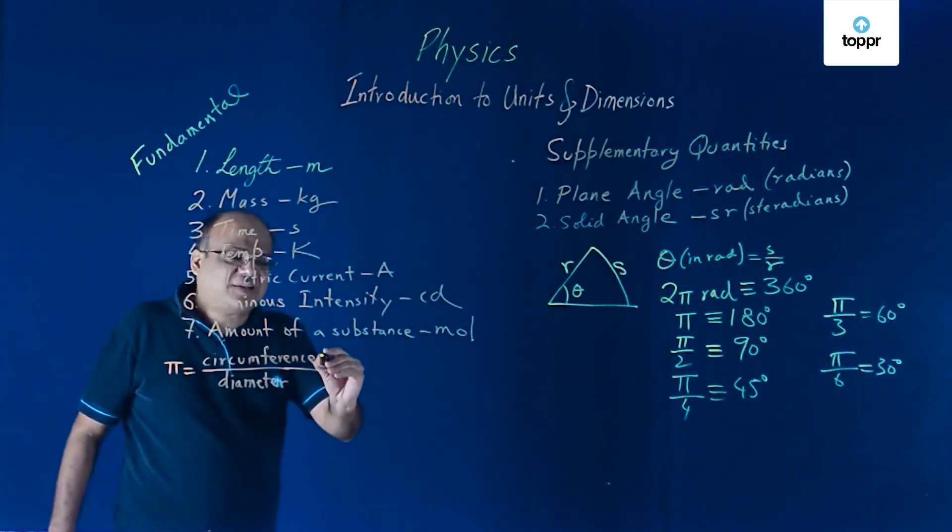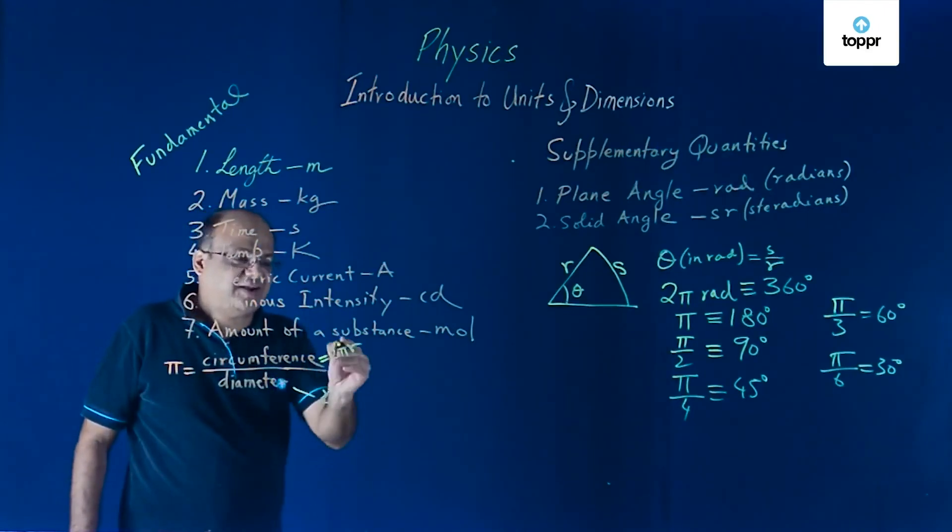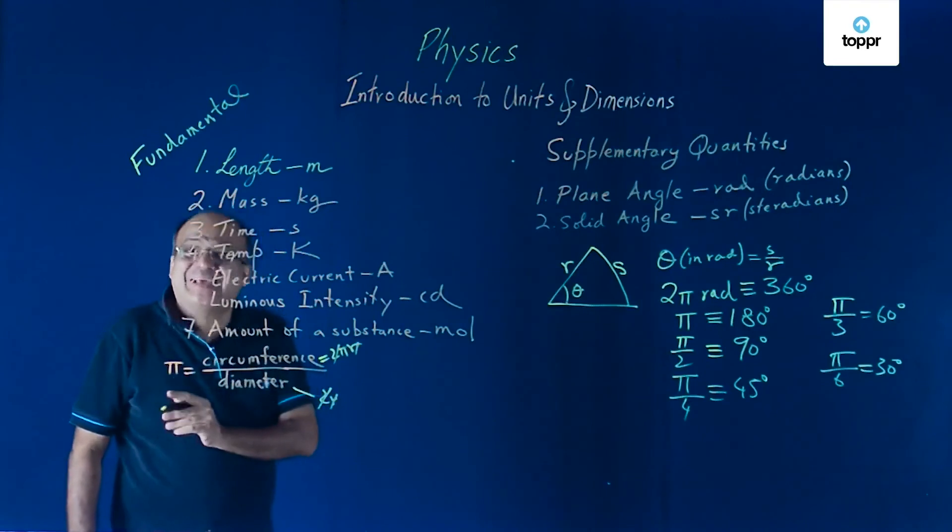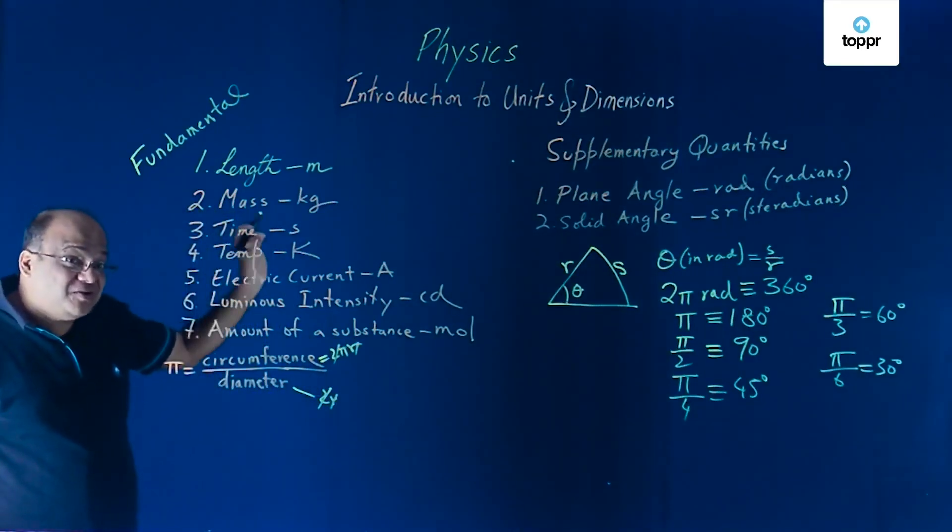This you can remember easily because circumference is 2 pi r. And diameter is 2 r. So, this 2 r will get killed. You are left with pi. So, pi is circumference by diameter of any circle.